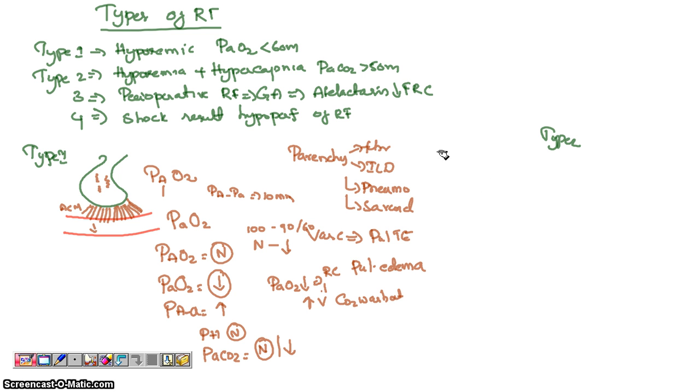Now let us see type 2. What happens in type 2? The same thing, this is the alveoli, and let this be the artery.